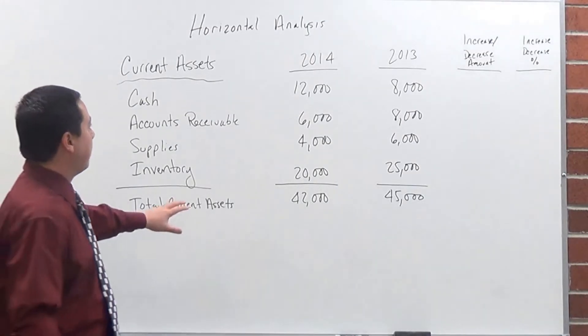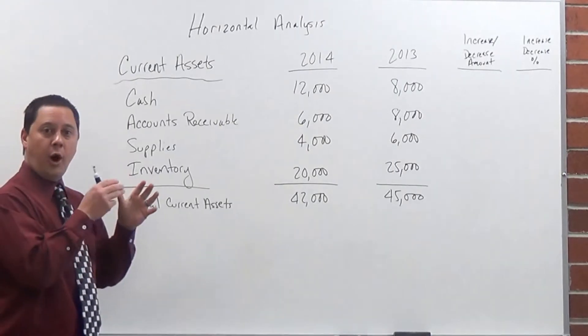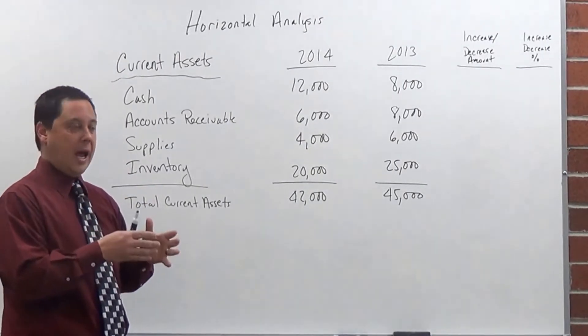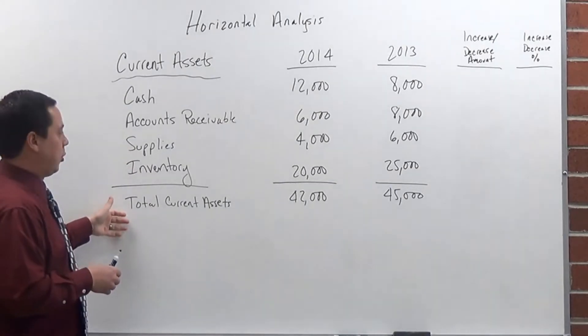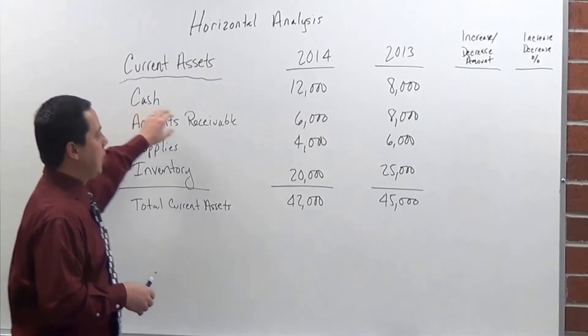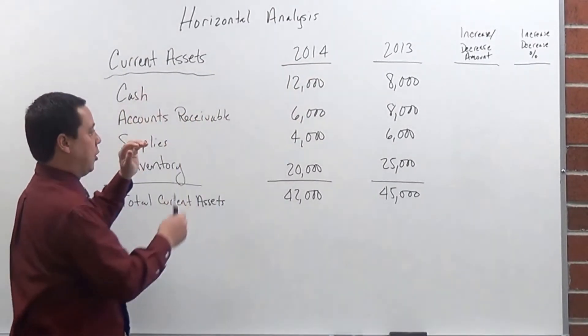So as you can see here behind me, I've taken the balance sheet that's focused in a little more on one specific area, which is our current assets. So I have four different accounts on my total current assets. As you can see here, there's the 2013 values and my 2014 values, there's been a change in those values.